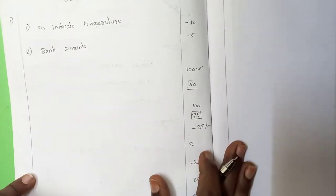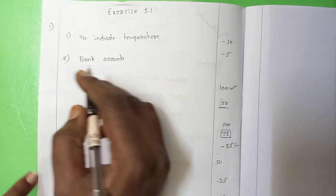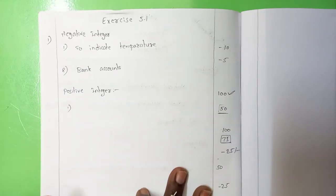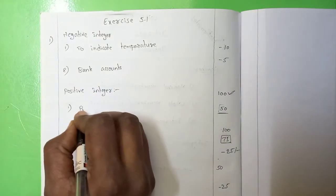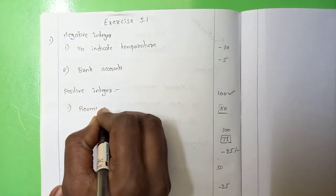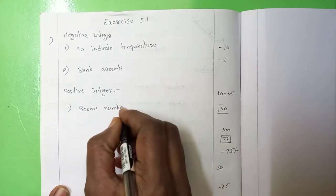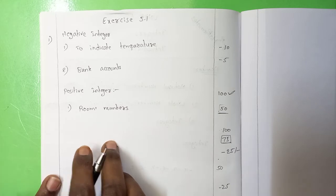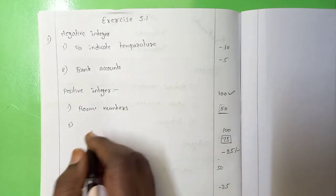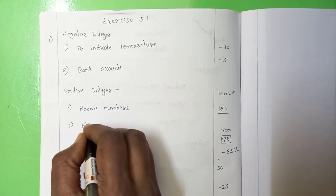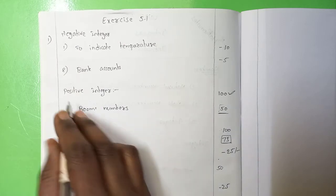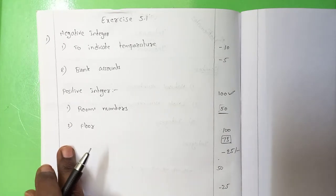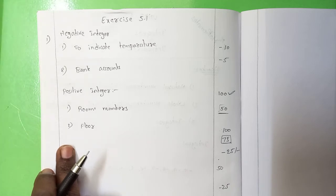Those are the situations for negative numbers. For positive numbers — to indicate room numbers we use positive integers, right? Room numbers in hotels, in school. And to indicate floors also — first floor, second floor — we use positive integers. Those are the two examples I have given for both negative and positive. If you wish, you can write your own example also.